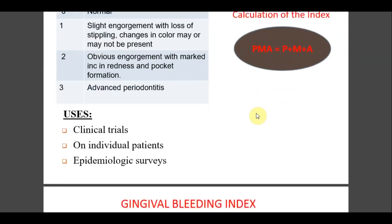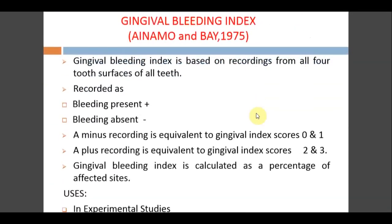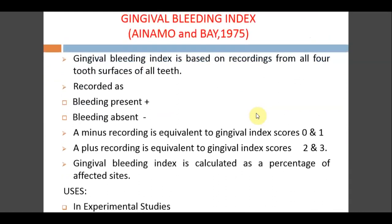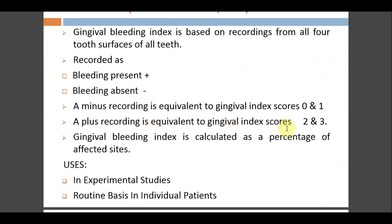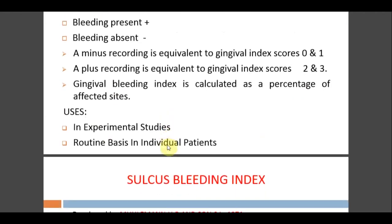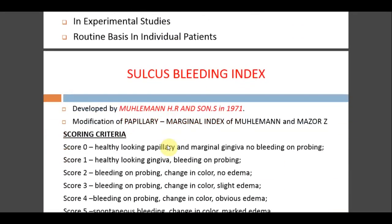The Gingival Bleeding Index was given by Ainamo and Bay in 1975, recording bleeding from all four tooth surfaces (buccal, lingual, mesial, distal) as bleeding present (+) or absent (−). A negative sign equals 0 and a positive sign equals 1 through 3. The Gingival Bleeding Index is calculated as a percentage of affected sites. It can be used in experimental studies and in individual patient assessments.